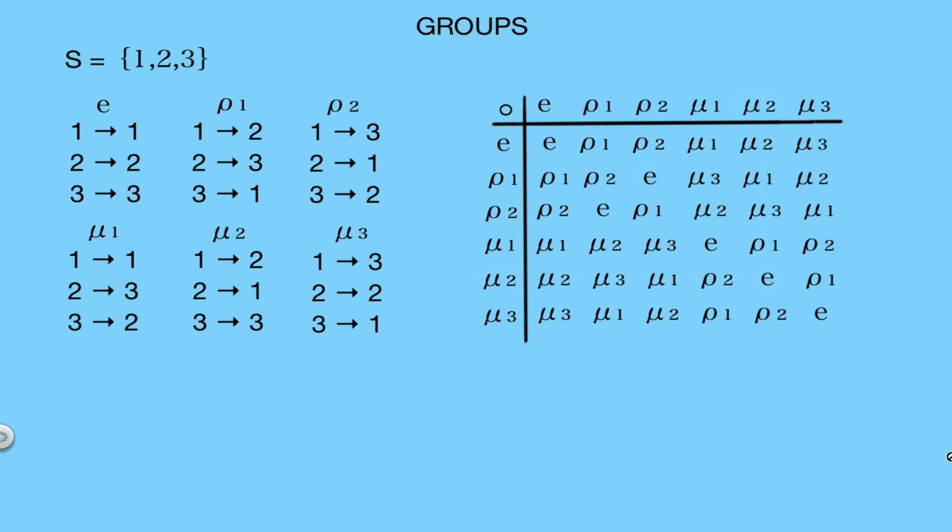Also every element contains an inverse, and you can go through and check that in our table. Let's take for example μ2. We want to find an element that when combined with μ2 gives us the identity element, and we see that the element would be μ2, so it's its own inverse. ρ1 has the inverse ρ2, and you can do this for every element.